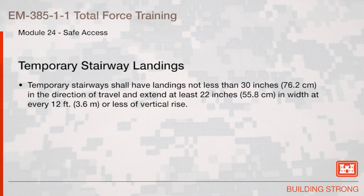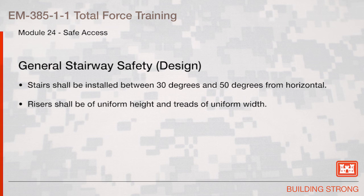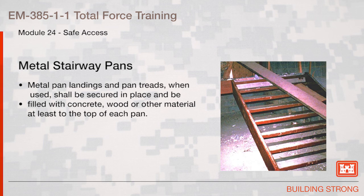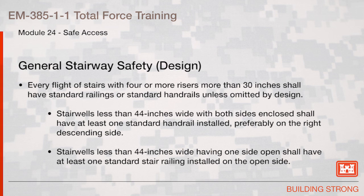Temporary stairway landings shall be not less than 30 inches in the direction of travel and extend at least 22 inches in width at every 12 feet or less of vertical rise. Stairs shall be installed between 30 degrees and 50 degrees from the horizontal. Risers shall be of uniform height and treads of uniform width. Metal pan landings and metal pan treads, when used, shall be secured and filled with concrete, wood, or other material at least to the top of each pan. Every flight of stairs with four or more risers, more than 30 inches in height, shall have standard railings or standard handrails unless omitted by design.